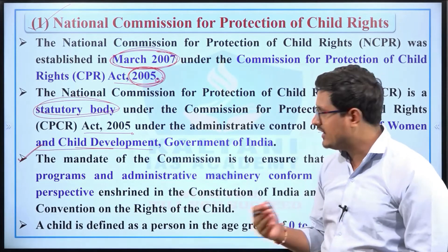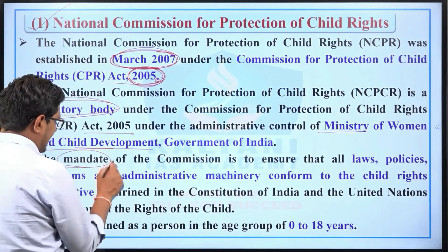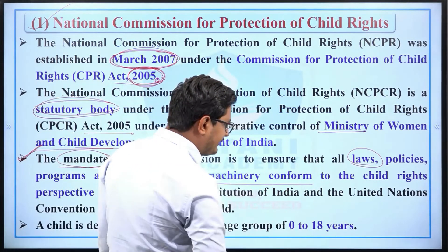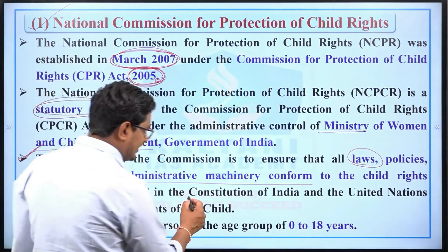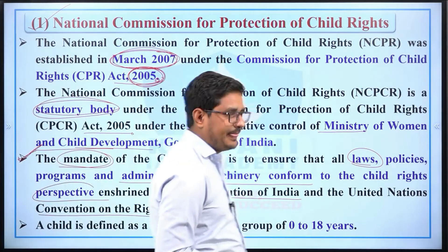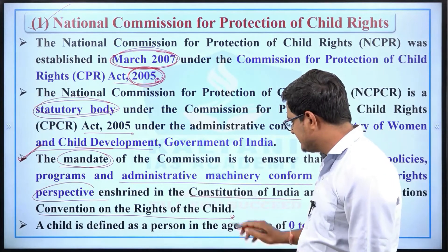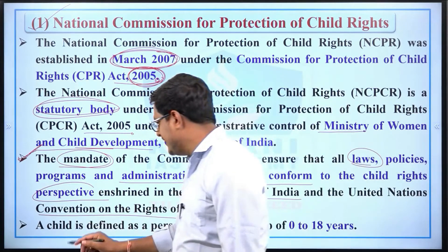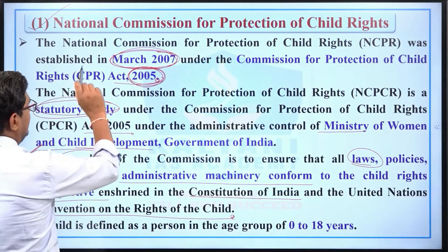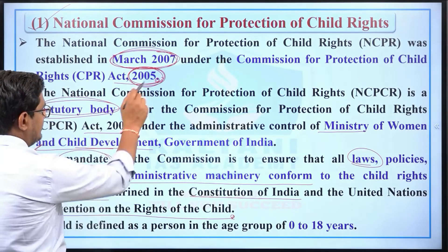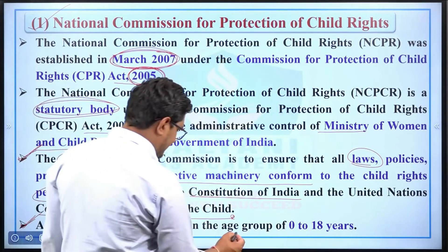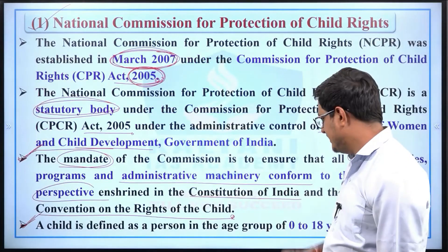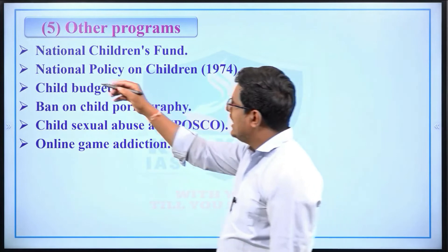The mandate of the commission is to ensure that all laws, policies, programs, and administrative machinery conform to the child rights perspective as enshrined in the Constitution of India and the United Nations Convention on the Rights of the Child. According to the CPCR Act 2005, a child is defined as a person in the age group of 0 to 18 years — the same definition as in the international convention.